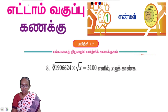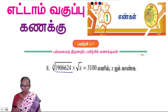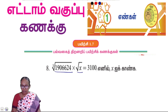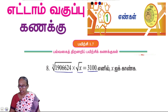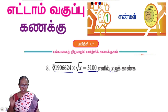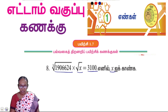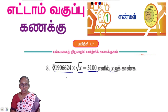Cube root of x. The number is given: cube root into square root of x is equal to 300.